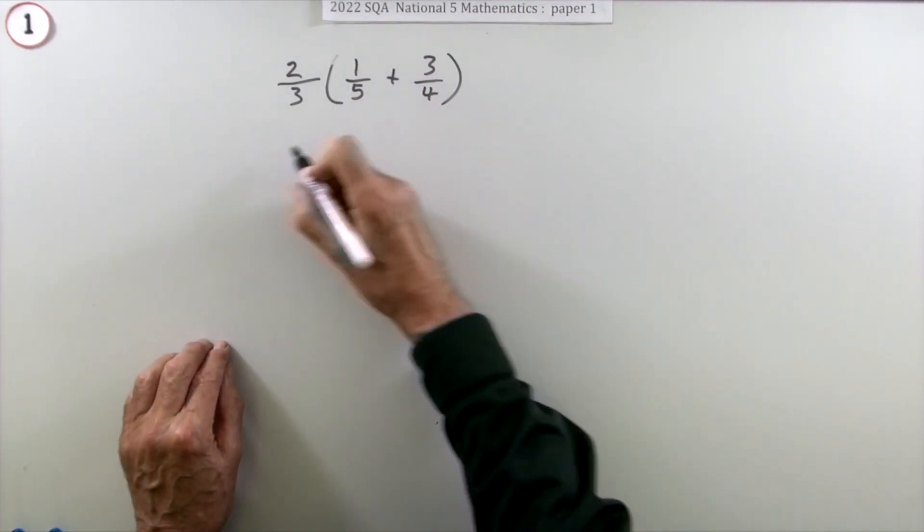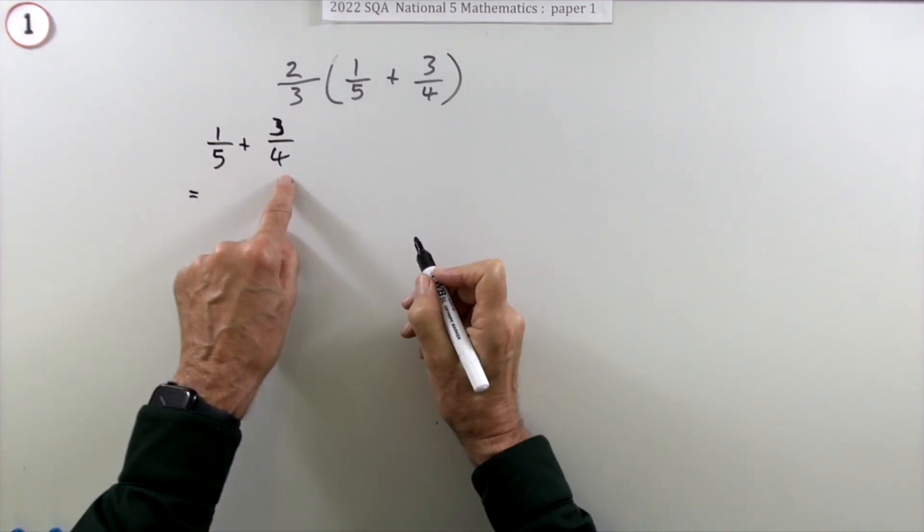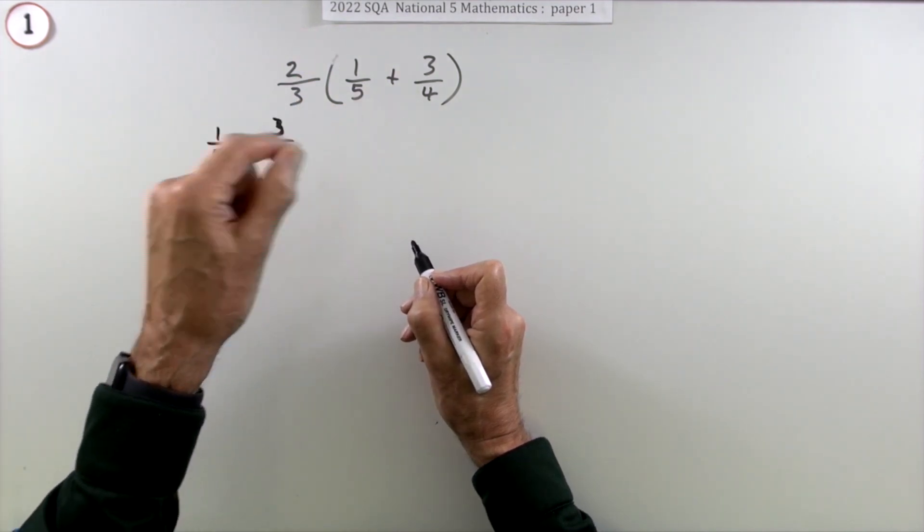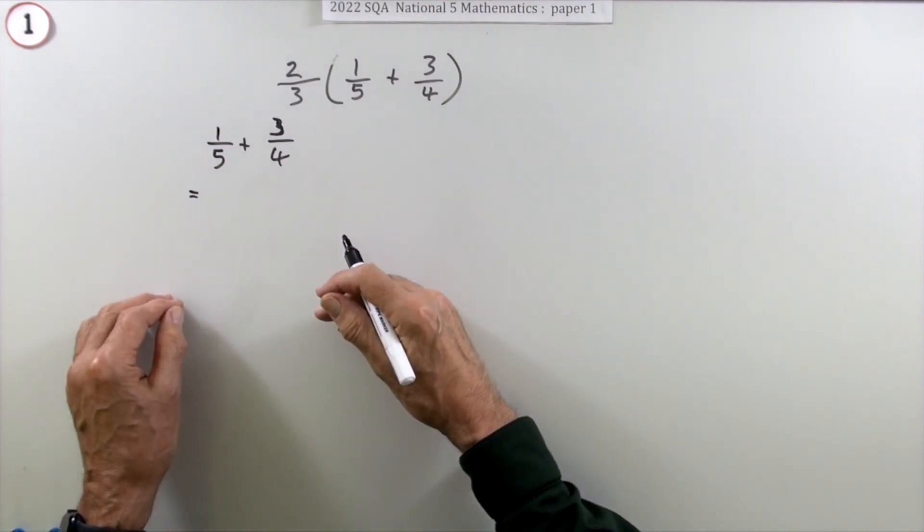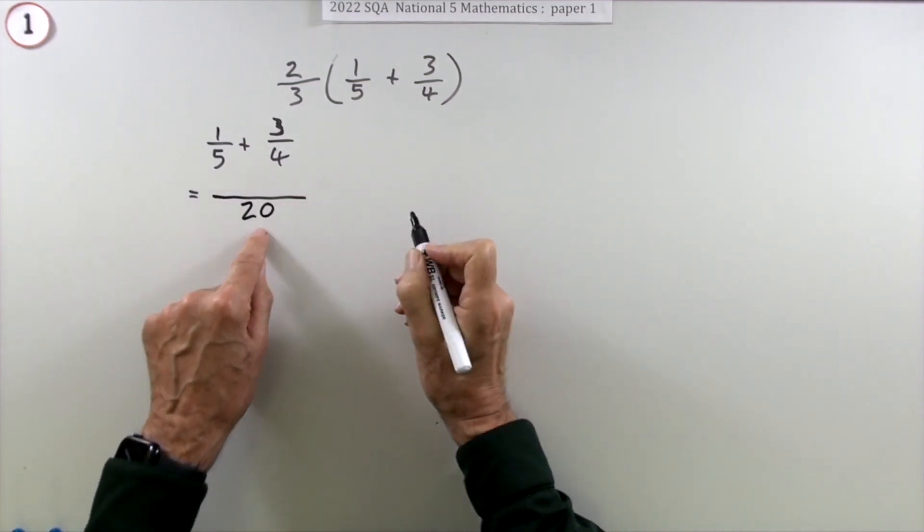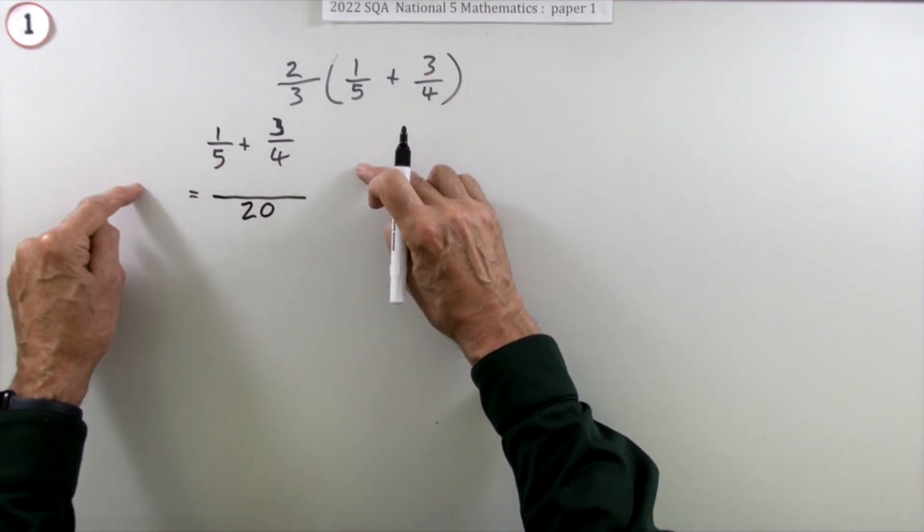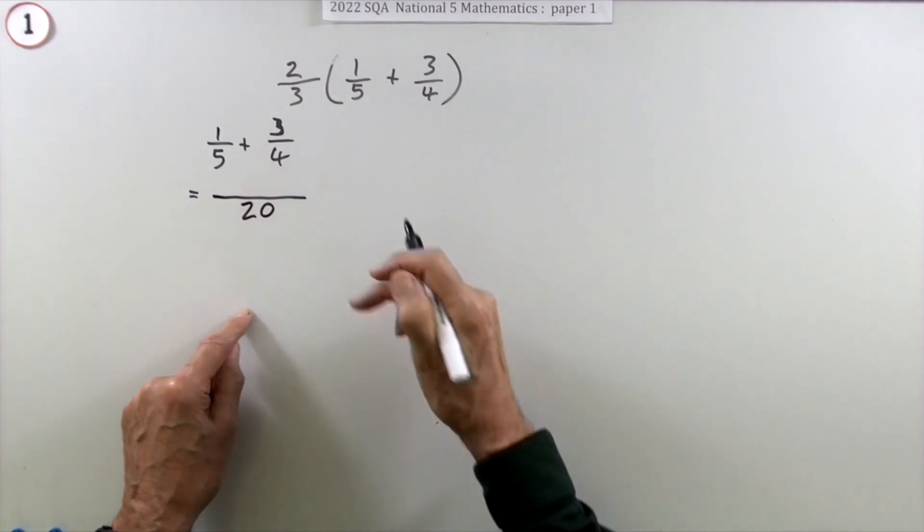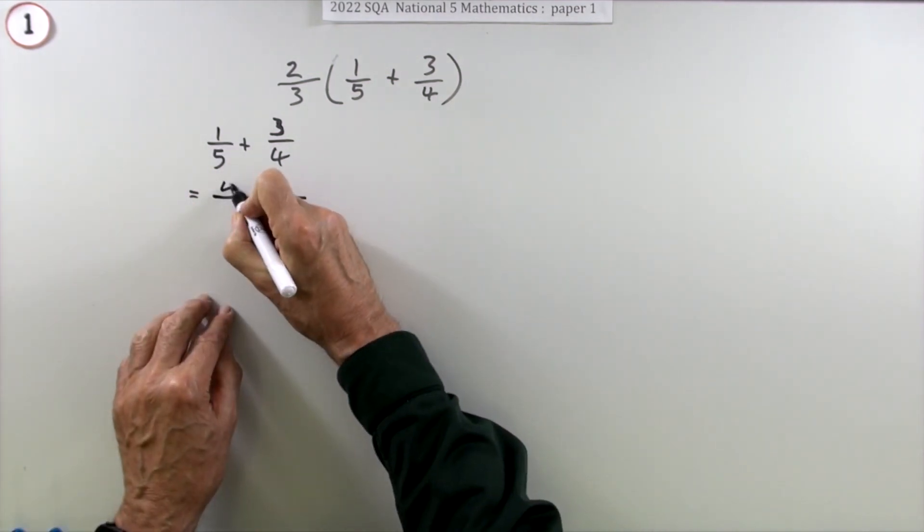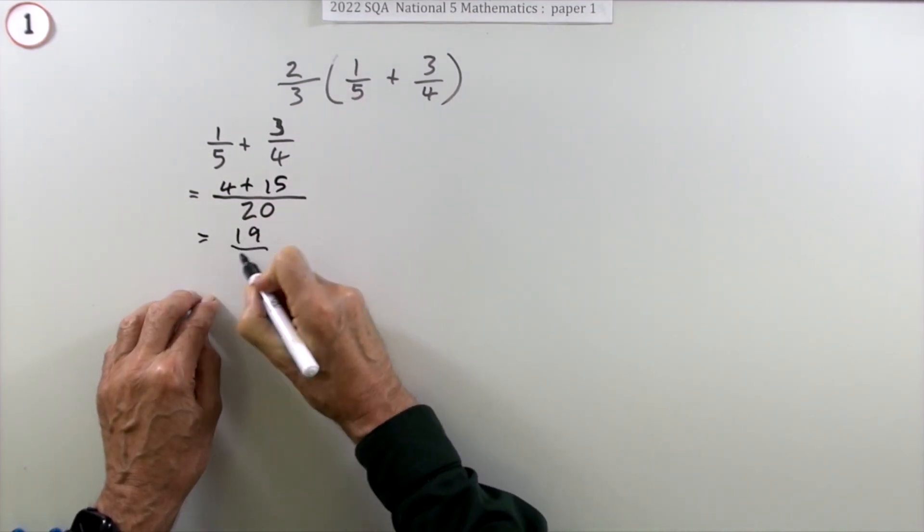First of all, doing the brackets first: one-fifth plus three-quarters. You can't add fractions unless they're of the same amount. You can't add pounds and dollars unless you change them both into pounds or both into dollars or both into something else like euros. So find something they both divide into: 20. Now change them accordingly. Five to twenty goes four, so it's four times the top. Four to twenty goes five, so five times the top.